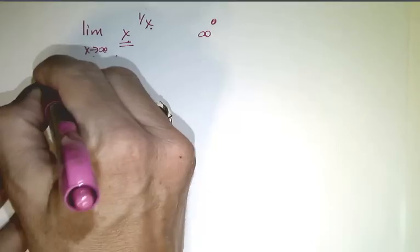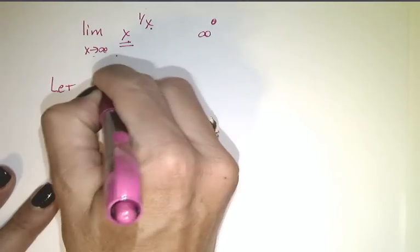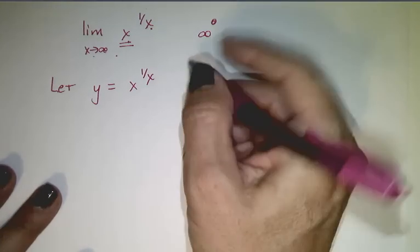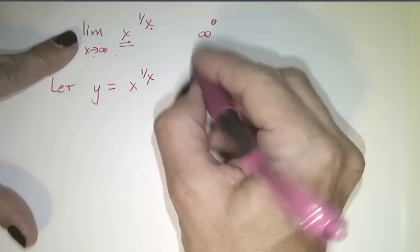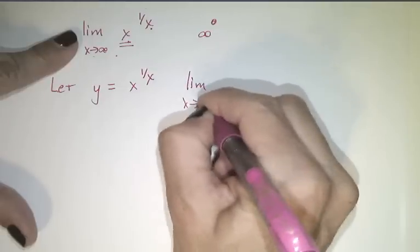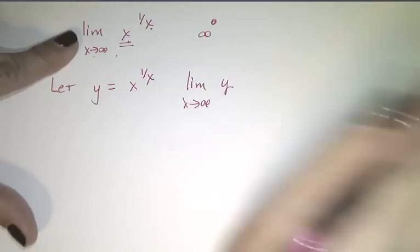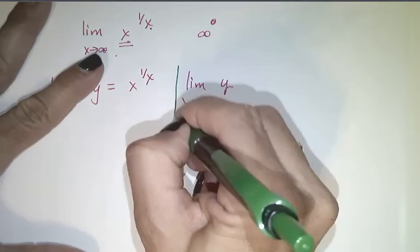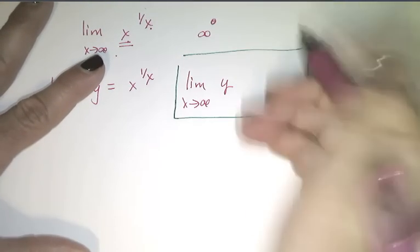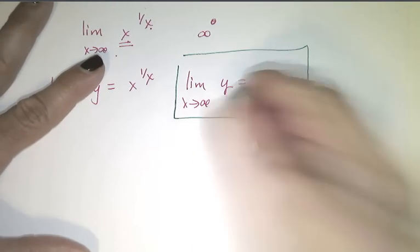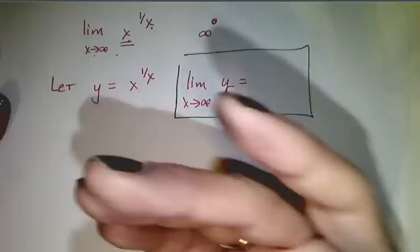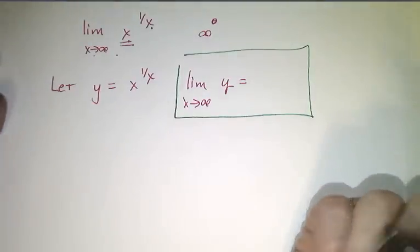I'm going to let y be equal to x to the 1 over x. So finding this limit is the same thing as finding the limit of y — that's what I want. But I don't know how to do it directly. I only know how to work with products, quotients, and differences.